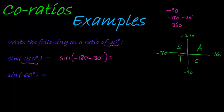Negative 180 minus 30 is in the second quadrant. Sine is positive in that second quadrant, so this can just become sine of 30 degrees. We can even use our special angles to simplify this, but that's not what they asked. They said write it as a ratio of 30 degrees, and that's what we've done.